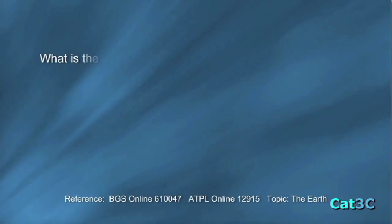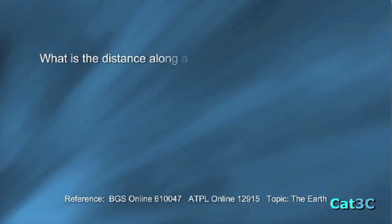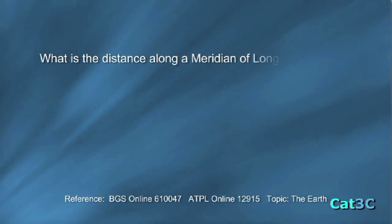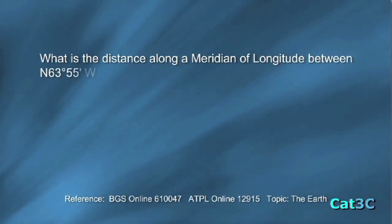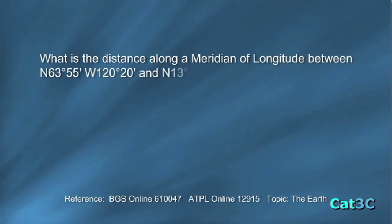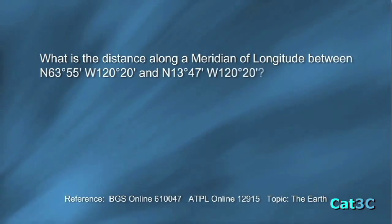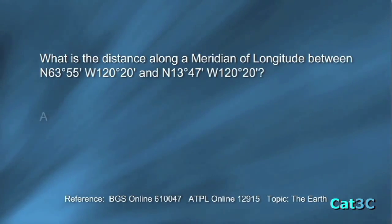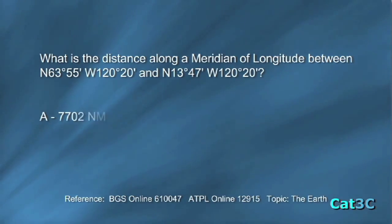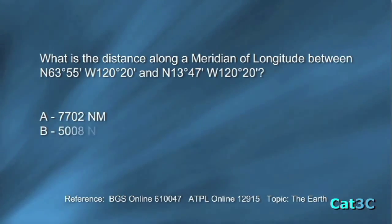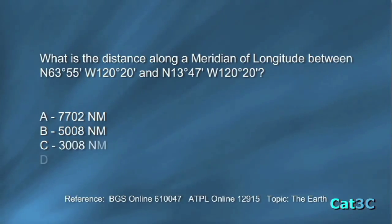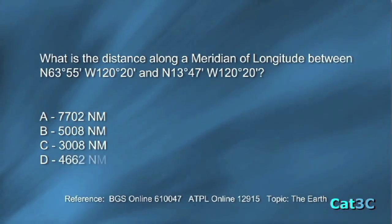What is the distance along a meridian of longitude between north 63 degrees 55 minutes, west 120 degrees 20 minutes, and north 13 degrees 47 minutes, west 120 degrees 20 minutes? The answers are 7,702 nautical miles, 5,008 nautical miles, 3,008 nautical miles, or 4,662 nautical miles.